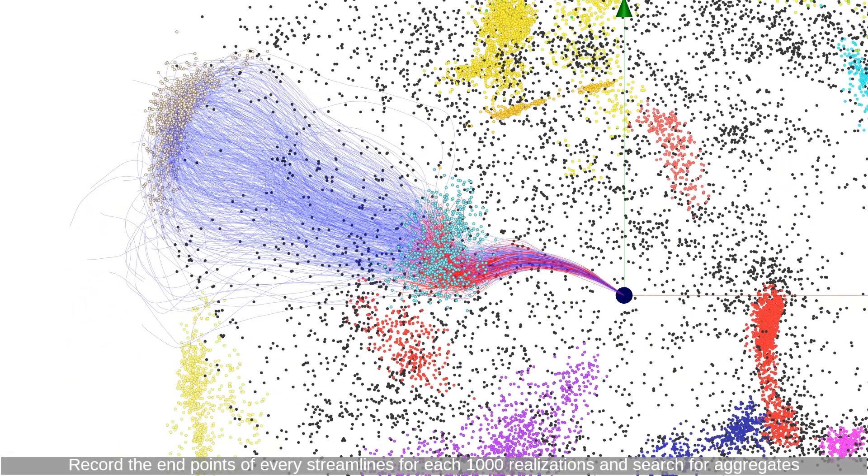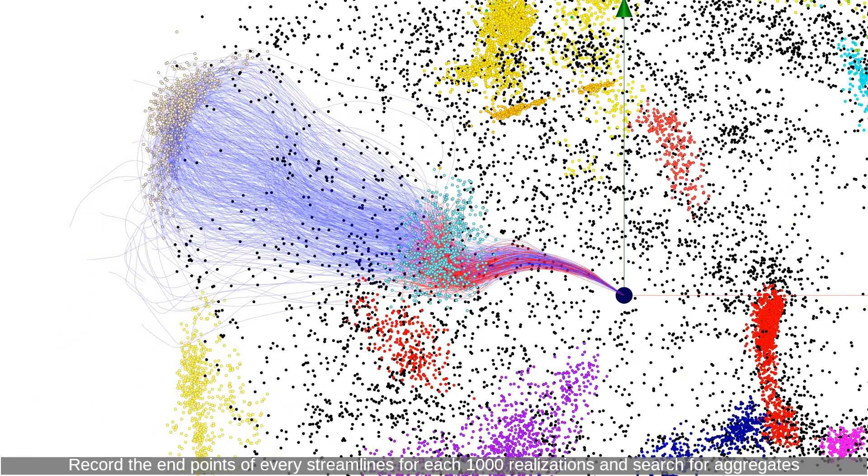Record the endpoints of every streamline for each 1,000 realizations and search for aggregates. Aggregated attractors are given distinctive colors, others are shown black.